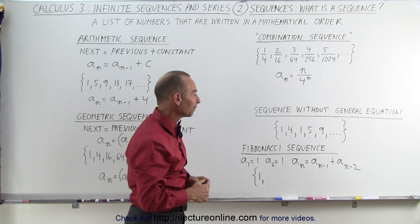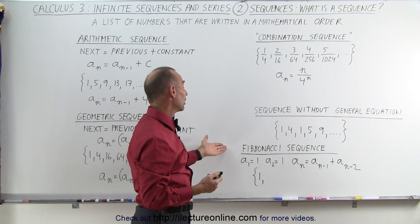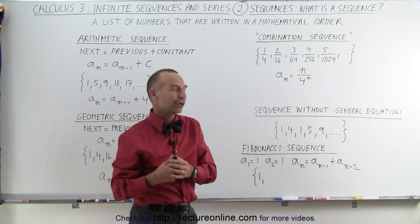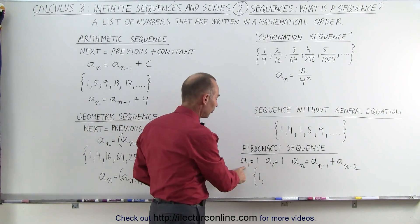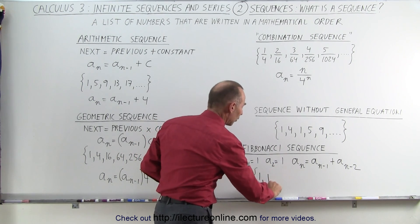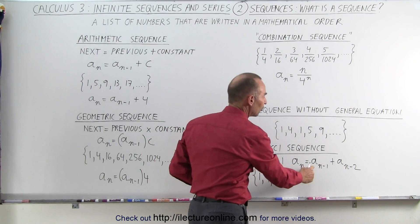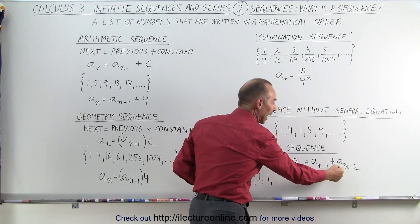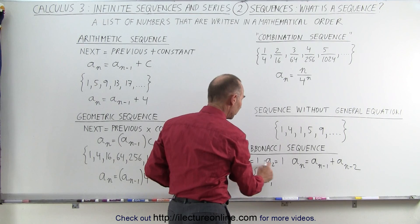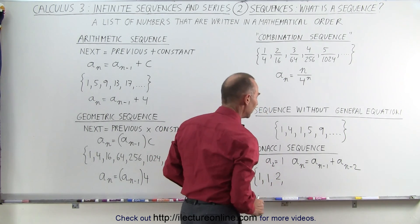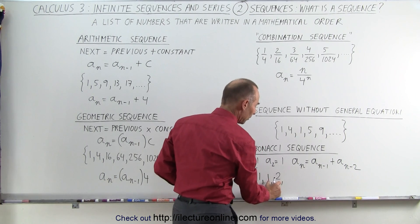Then there's some other famous sequences, such as the Fibonacci sequence. The Fibonacci sequence has a very peculiar sequence. It starts with the first element being 1, the second element being 1. Now the third element is simply the sum of the previous two elements, the previous and two elements back. So if I add 1 plus 1, I get the third element. That would then be equal to 2.